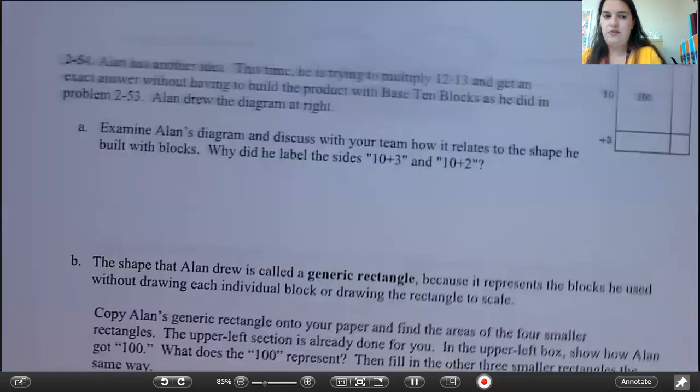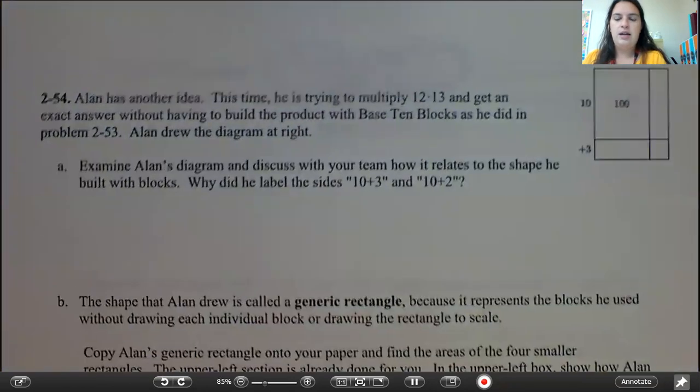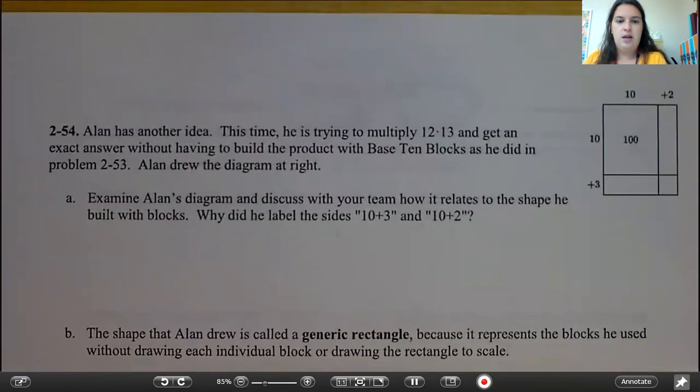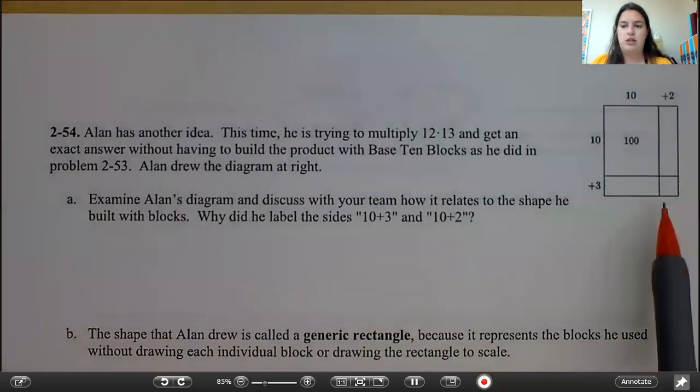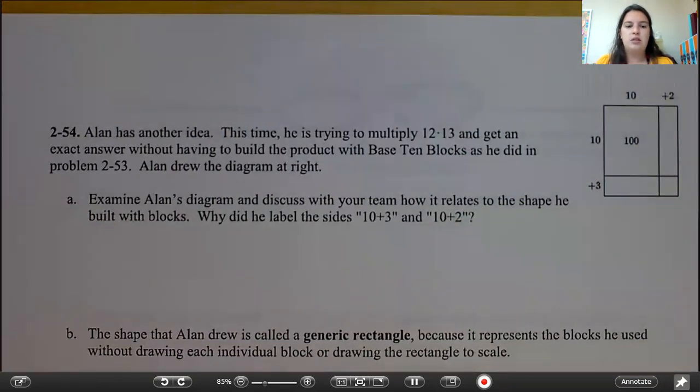Okay, so 2.54 says Alan has another idea. This time he is trying to multiply 12 times 13 and get an exact answer without having to build the product with base 10 blocks as he did in problem 2.53. So we didn't do problem 2.53, so you do not have to build anything with base 10 blocks. Alan drew the diagram at right, which is this diagram right here. Examine Alan's diagram and discuss with your team how it relates to the shape he built with blocks. Why did he label the sides 10 plus 3 and 10 plus 2?